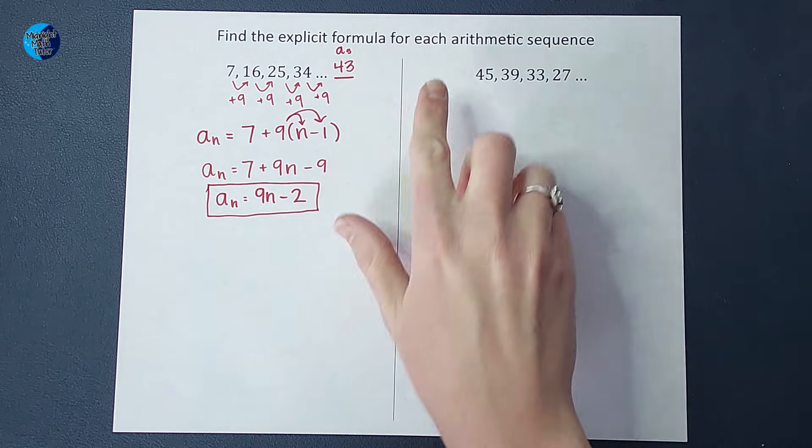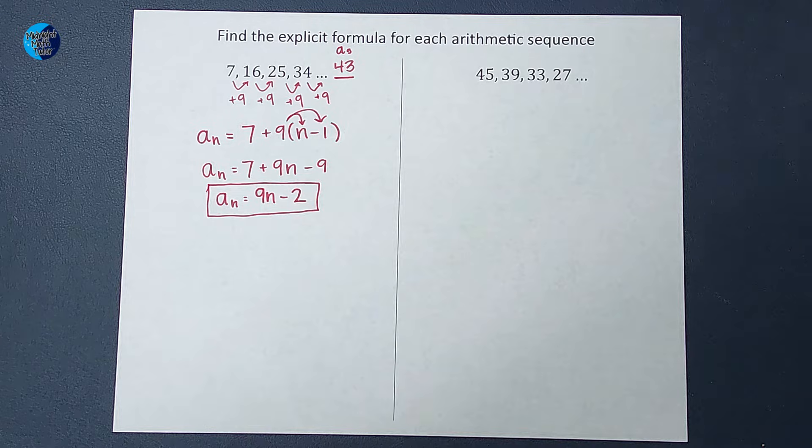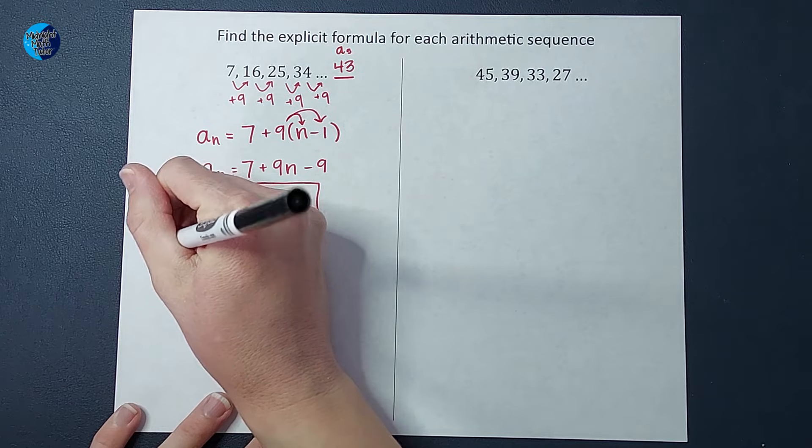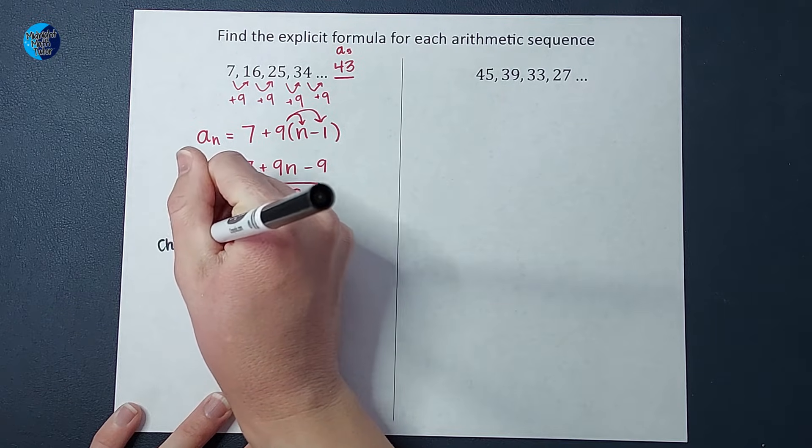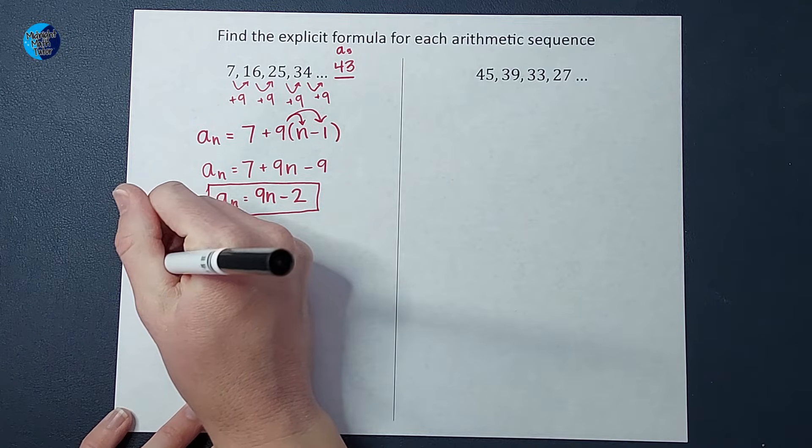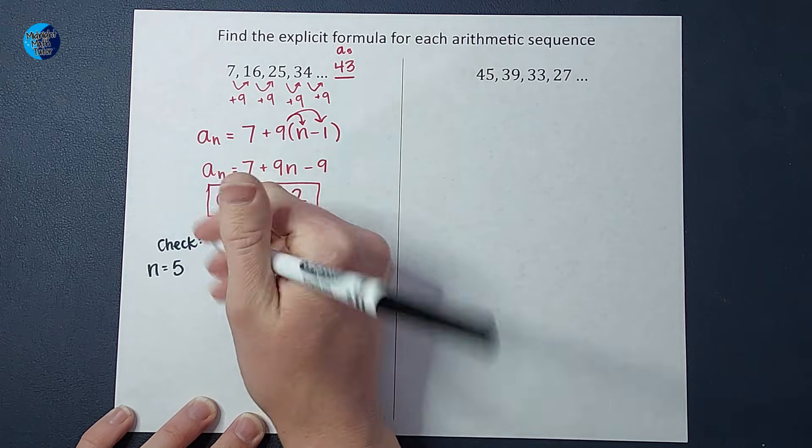Now we know what the fifth term is, but let's go ahead and use our equation, our formula and make sure that we get it right. So we're just going to check right here. So I am looking for the number in the fifth spot. n equals five, right? So let's plug that in.